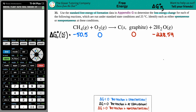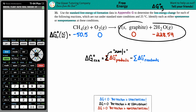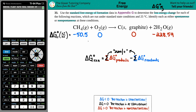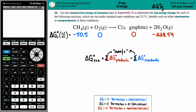We use the formula that only involves ΔG values: ΔG° for the whole reaction equals the sum of all your ΔG° products minus the sum of all your ΔG° reactants. In essence, it's products minus reactants.